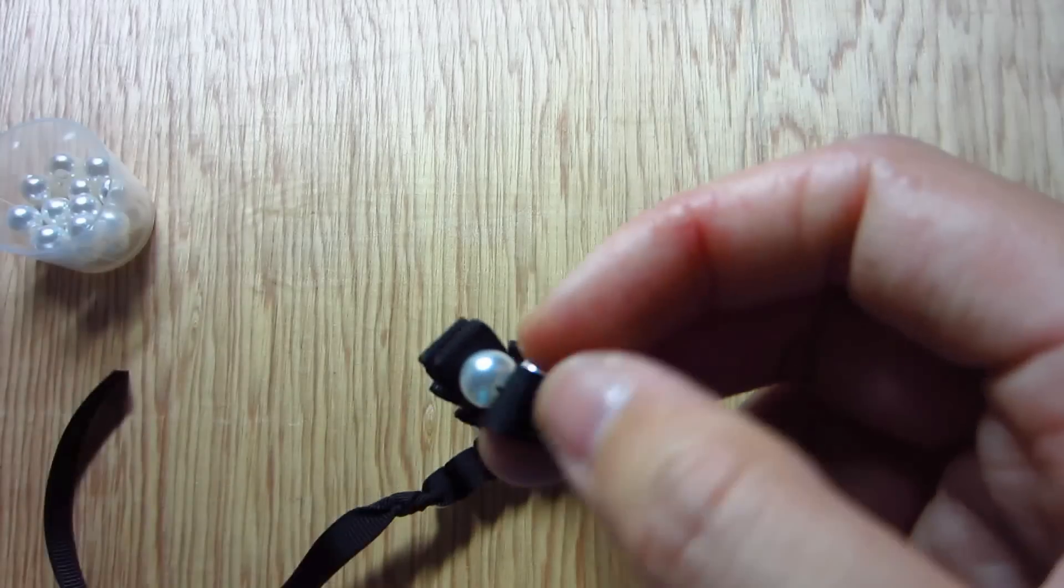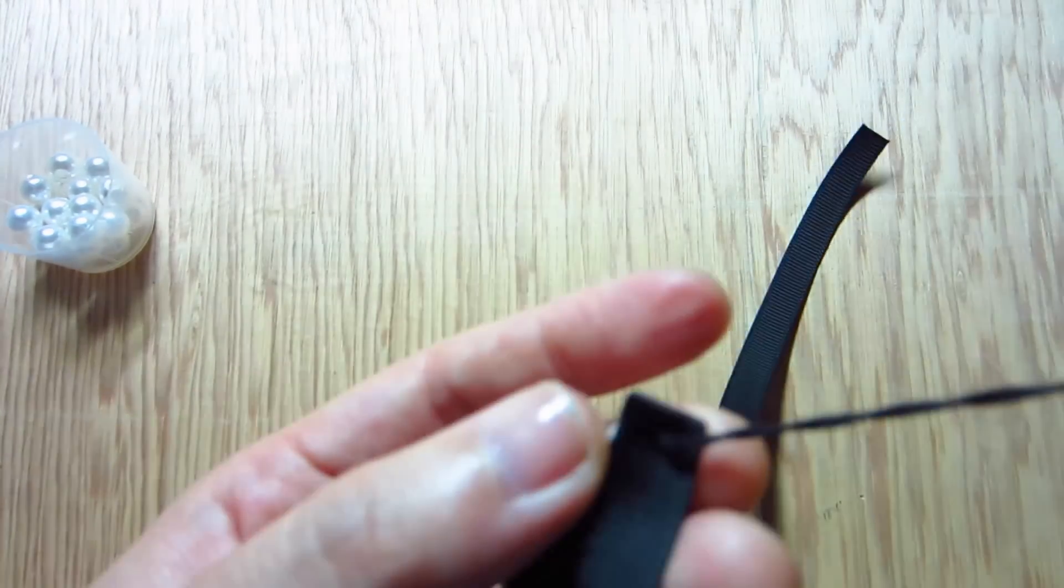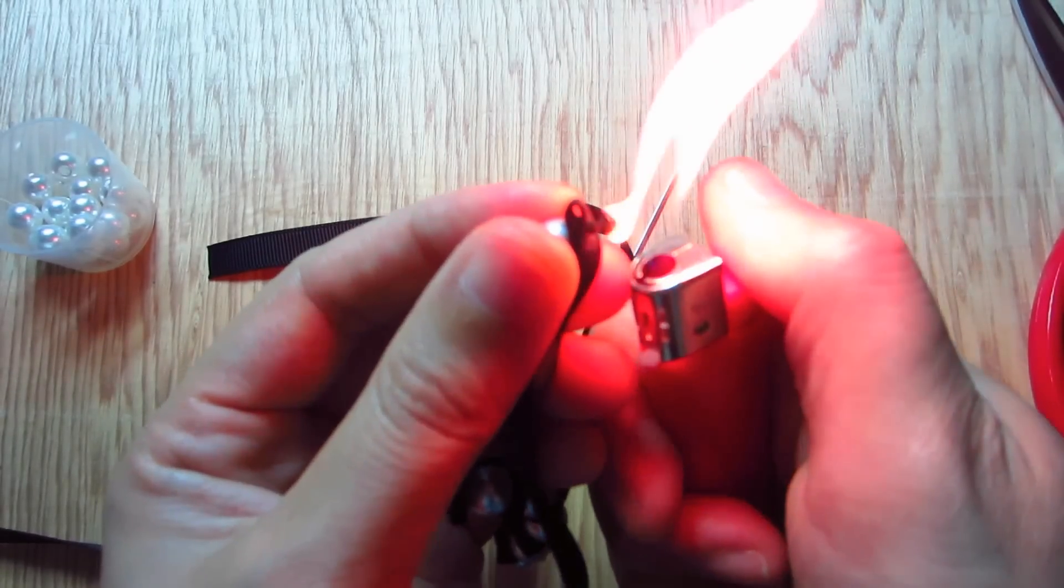Once you get to the end, tie a knot on the elastic cord like so. Snip out the ends and melt them to secure the knot.